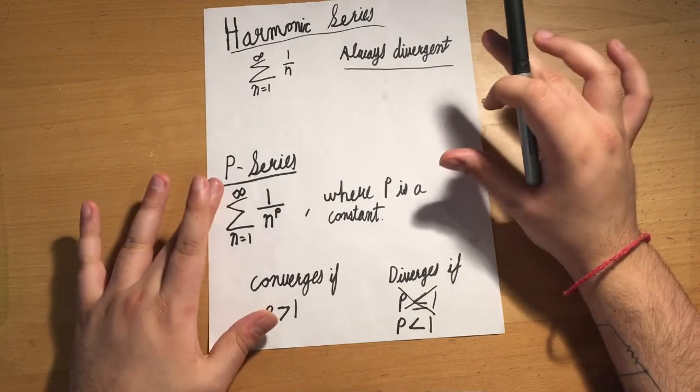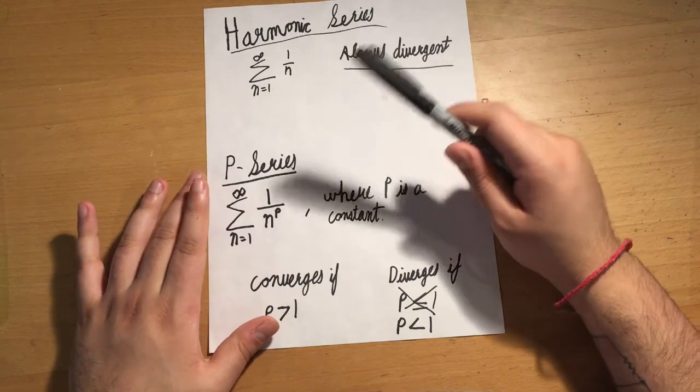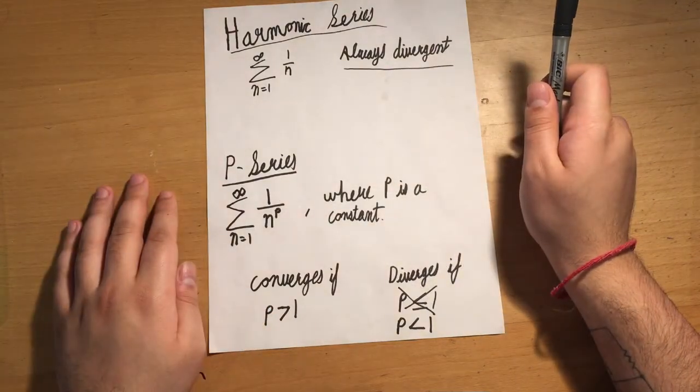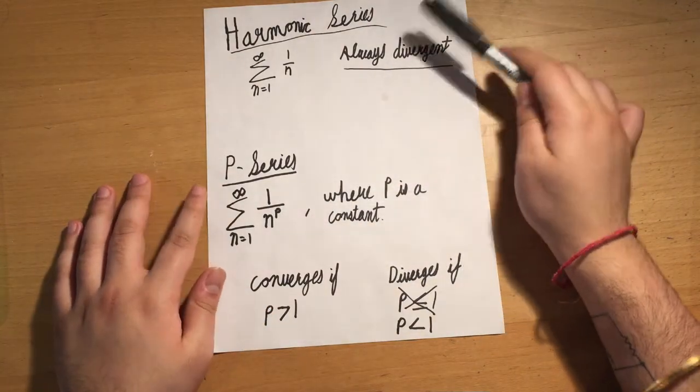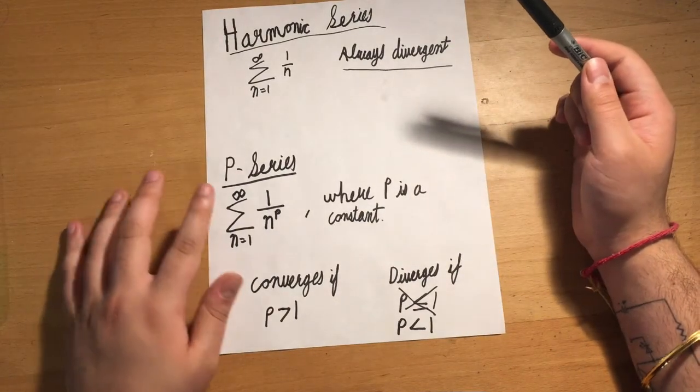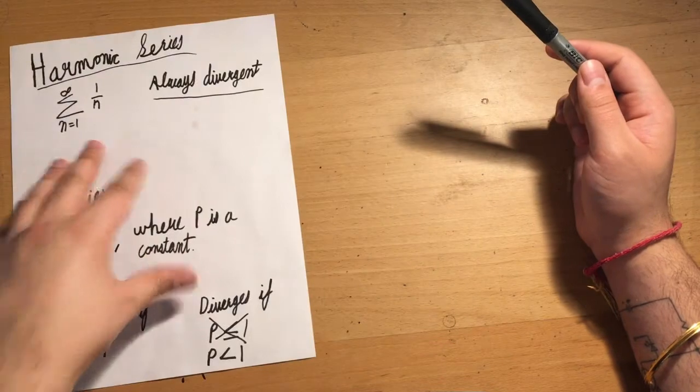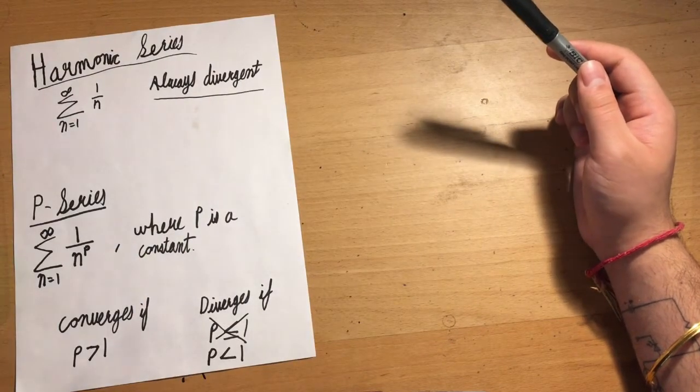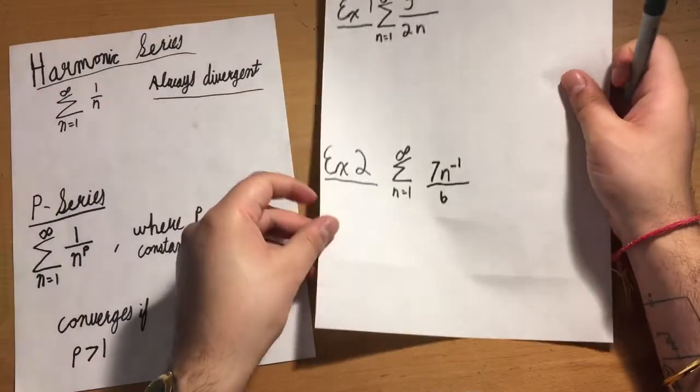That's pretty much it for the form of the series. If you can get something into this form, then you have easy tests to determine whether it's convergent or divergent. Let's go through some examples.